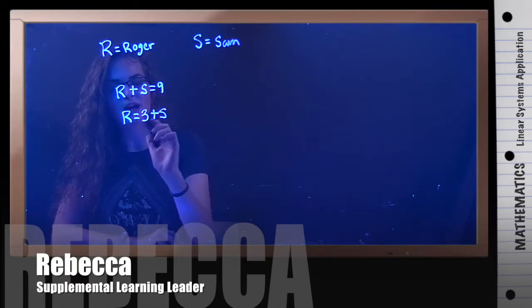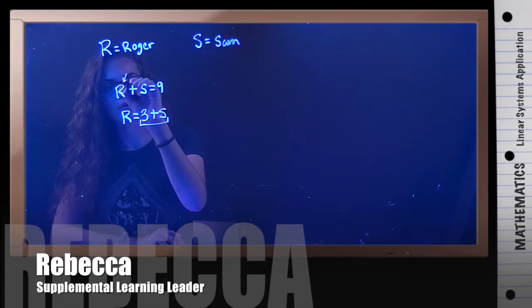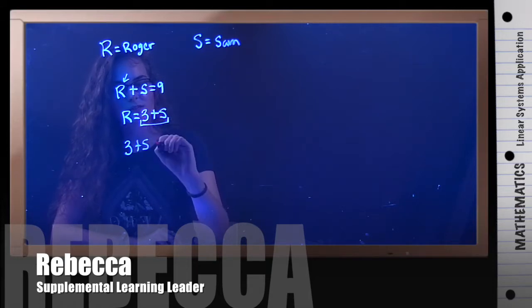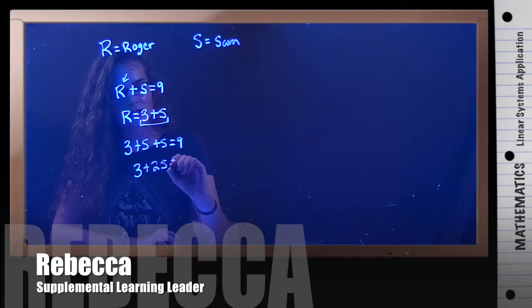But because we already have R isolated, let's use substitution. So I'm going to plug this expression in for R right here. So we have 3 plus S. Now we still have this plus S equals 9. So when we combine like terms, we have 3 plus 2S equals 9.